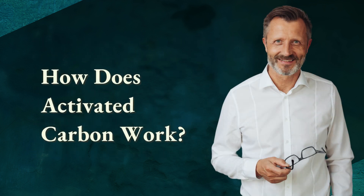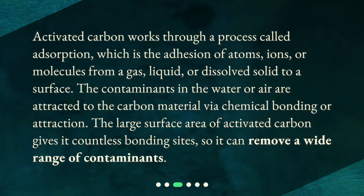How does activated carbon work? Activated carbon works through a process called adsorption, which is the adhesion of atoms, ions, or molecules from a gas, liquid, or dissolved solid to a surface. The contaminants in the water or air are attracted to the carbon material via chemical bonding or attraction. The large surface area of activated carbon gives it countless bonding sites, so it can remove a wide range of contaminants.